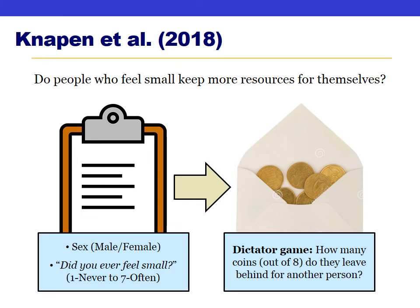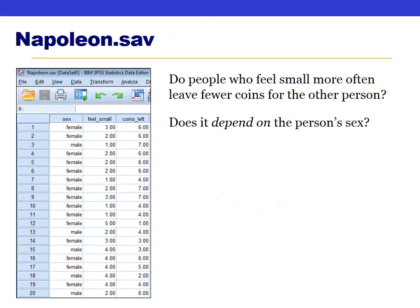As in the previous example, the researchers also wanted to know whether that relationship was different for men and women. The data are in napoleon.sav. We want to answer two questions: first, is there a relationship between feeling small and keeping resources such that people who feel small left fewer coins? Second, does the relationship between feeling small and leaving coins depend on the person's sex?